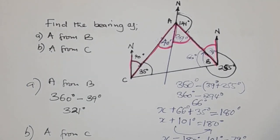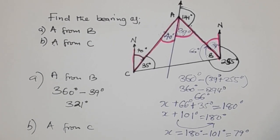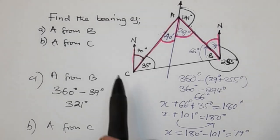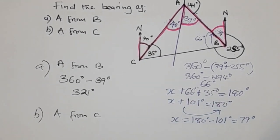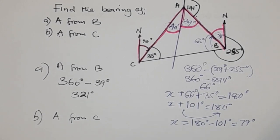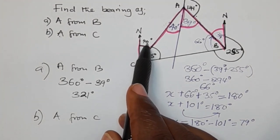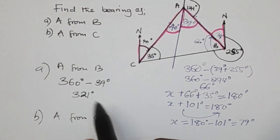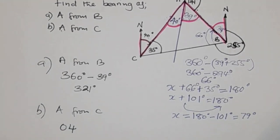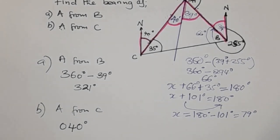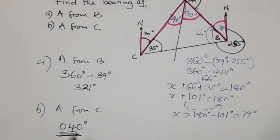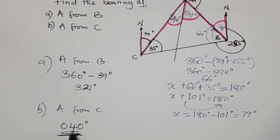In the previous video I explained that bearing is always written using three digits. So since this is 40 degrees, we don't write just 40 — in an exam, make sure all bearing answers are written using three digits. So the bearing of A from C is 040 degrees.